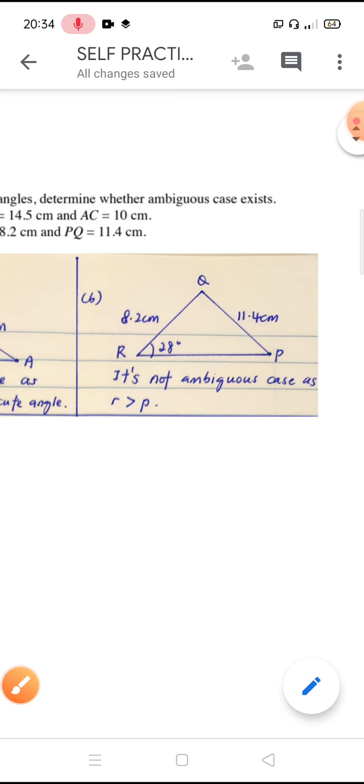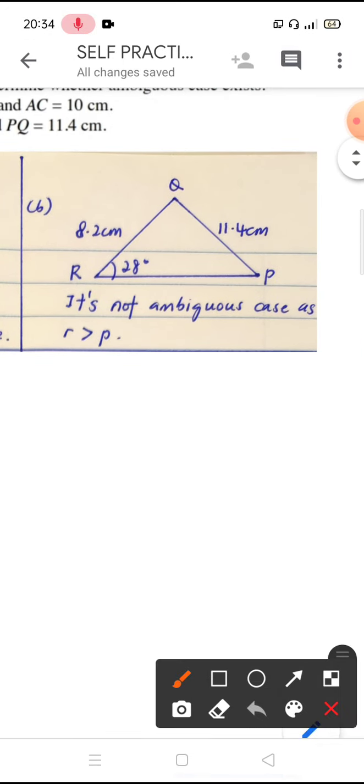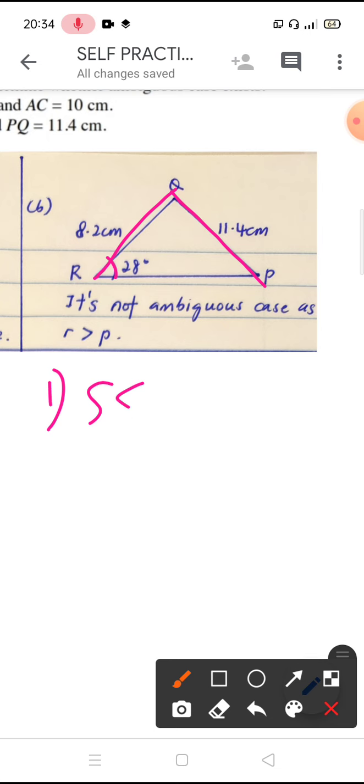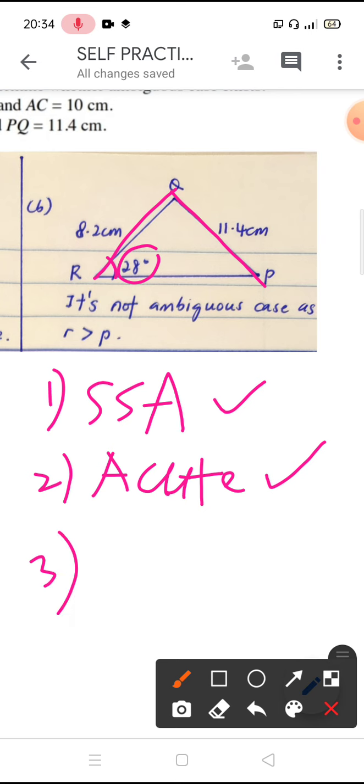Next we move on to question B. Question B is this one. So once again I will figure out the triangle based on the given length and angle. So we check, we have been given two sides, yes, and an angle. So the first one SSA, yes. Second, A is acute angle, yes, this one 28 is acute angle. And the third one is very important. So this one is length R, this one is length P.